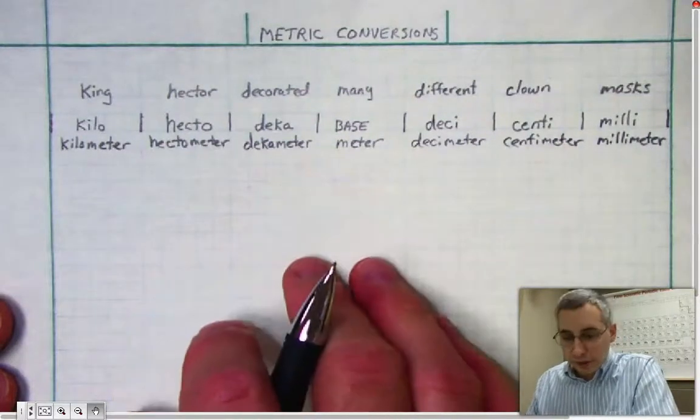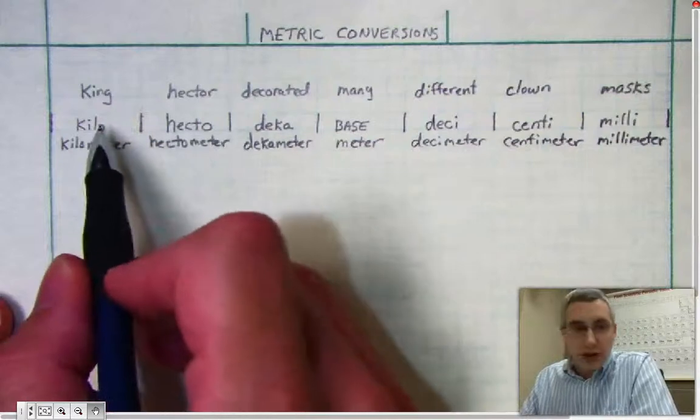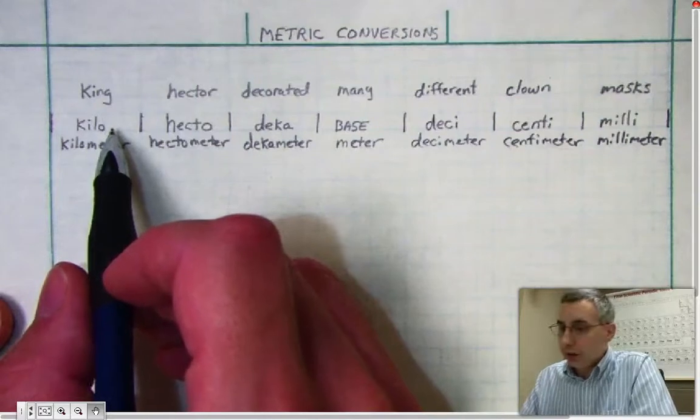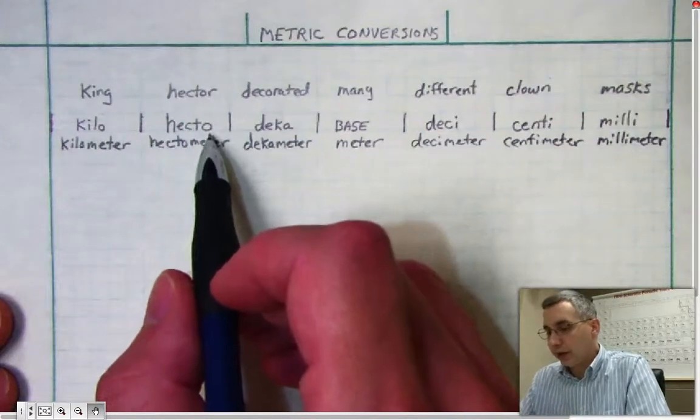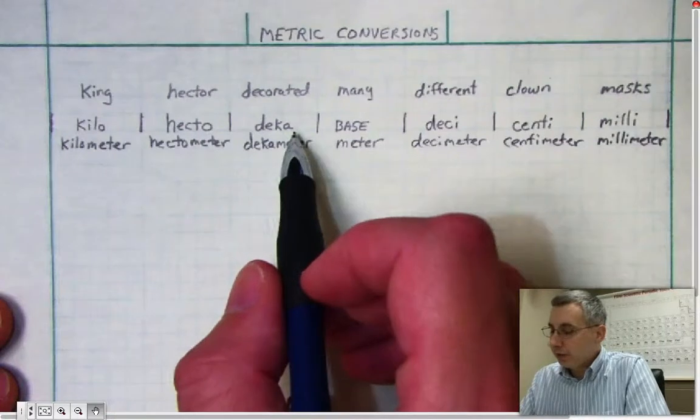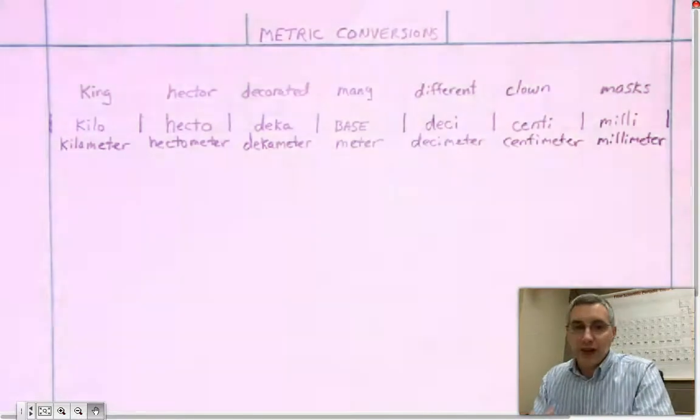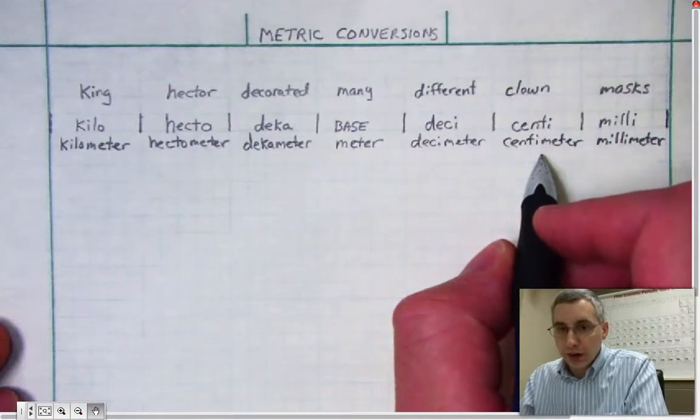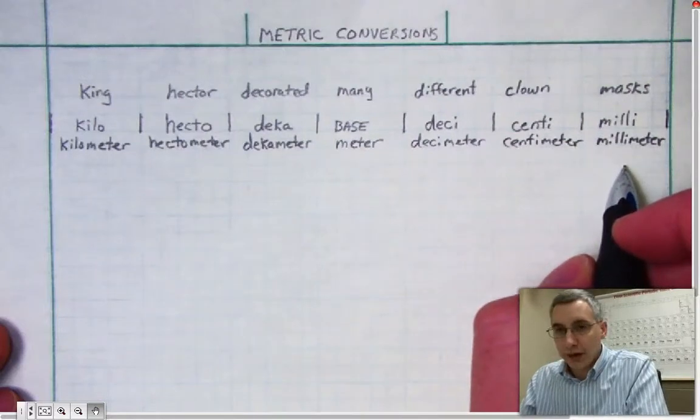Now what I'm going to do in the space below here is do some conversions. Before I do that, let me just remind you: the prefix Kilo means 1000 times, so if I have a kilometer I have a distance that is 1000 times one meter. Hecto stands for 100 times, so a hectometer is 100 meters. Deca stands for 10 times. The base unit is well, one times. Deci is 1/10 or 0.1 times the base unit. Centi is 1/100 or 0.01 times the base unit, and Milli is 1/1000, so 0.001 times the base unit.